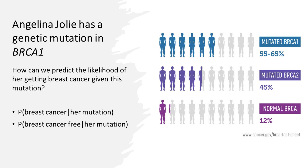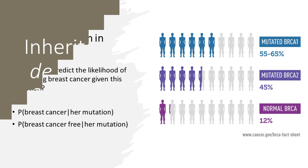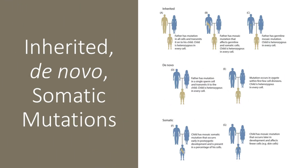Before we talk about how to calculate these numbers, let's first look at where our genetic variations come from. We all know that we inherit genetic variations from our parents. If our mother carries a particular mutant allele, there is a 50% chance that we may inherit it from her.